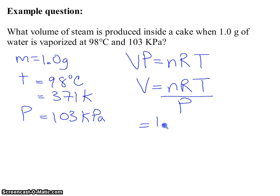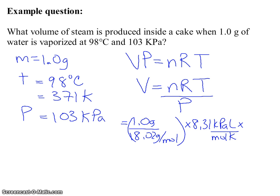Substituting for moles, I'm going to have to find the number of moles, and we're talking about steam, which is water. Molar mass is 18.02 grams per mole. So this is going to get me moles times R, which is 8.31 kilopascals liters per mole Kelvin times the temperature of 371 Kelvin. Divide all that by the pressure of 103 kilopascals.